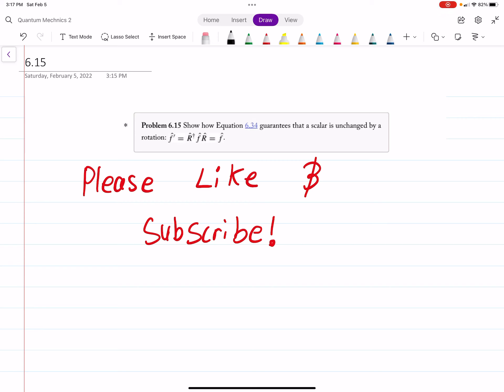So problem 6.15 says show that equation 6.34, I'll grab that in a second, guarantees that a scalar is unchanged by rotation. In other words, f prime equals r dagger f r, so that's what the transformation does, but that's ultimately just equal to f. It's unchanged.